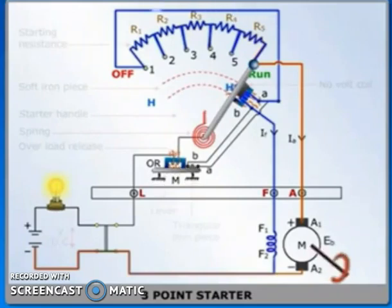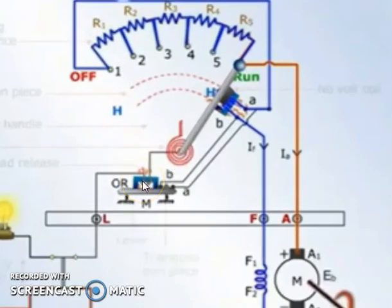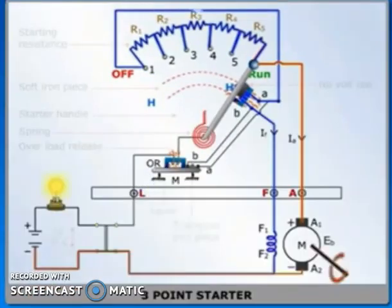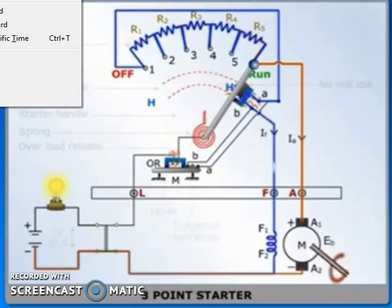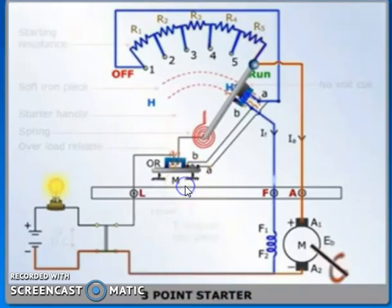Another protection device: overload release coil, OR. This is provided in series with the armature circuit. In case armature current exceeds a preset value due to overload, OR becomes more strong and attracts the movable soft iron arm pivoted at one end.